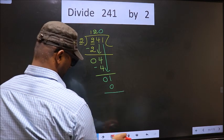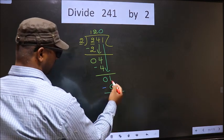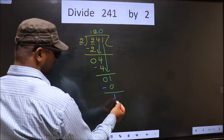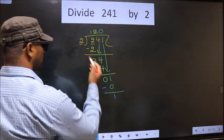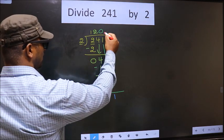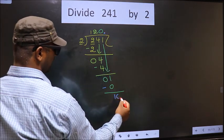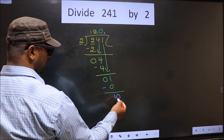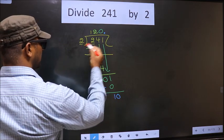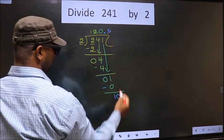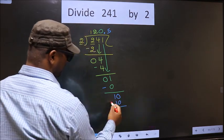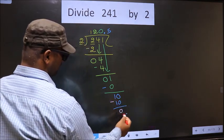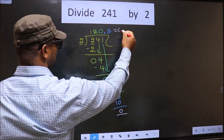Over here we did not bring any number down, and 1 is smaller than 2, so now you can put a dot. Dot and take 0 here. Here we have 10. When do we get 10 in 2 table? 2 5's 10. Now you subtract 10 minus 10, 0. So this is our quotient and this is our remainder.